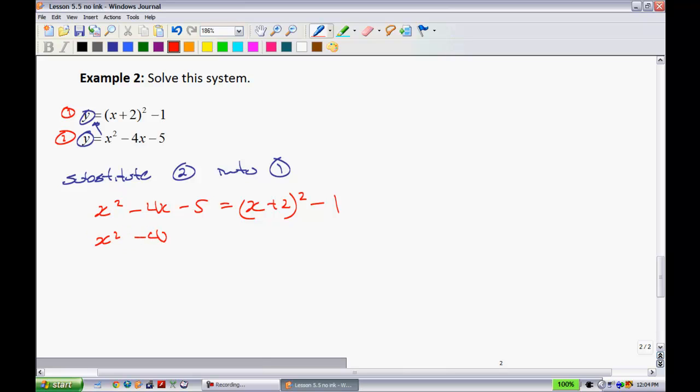From here, we have x squared minus 4x minus 5 equals, I'm going to foil this all out. This gives me (x plus 2) all multiplied by (x plus 2). When I use my distributive property and foil this out, I have x times x is x squared. x times 2 is 2x, and then 2 times x gives me another 2x, so both of those 2x's give me 4x. 2 times 2 is 4 minus 1.